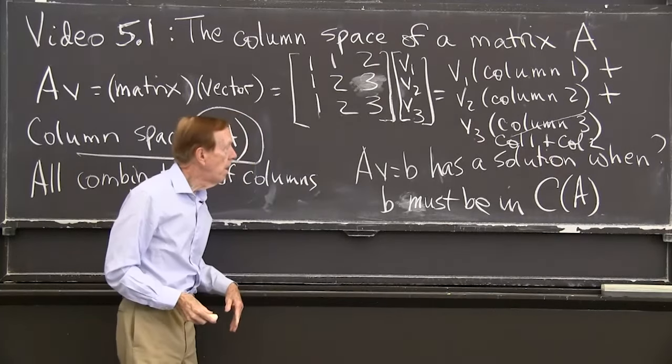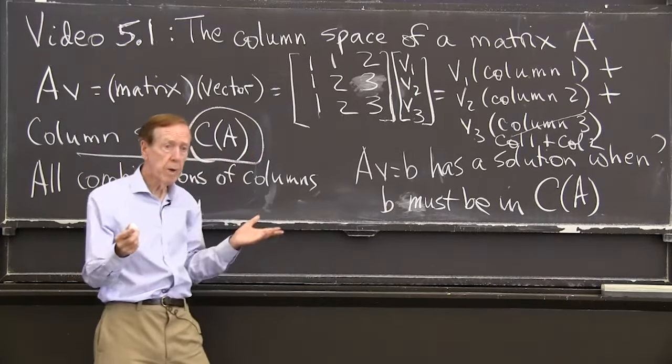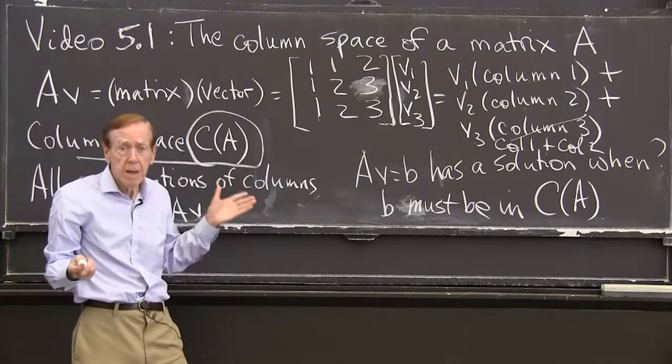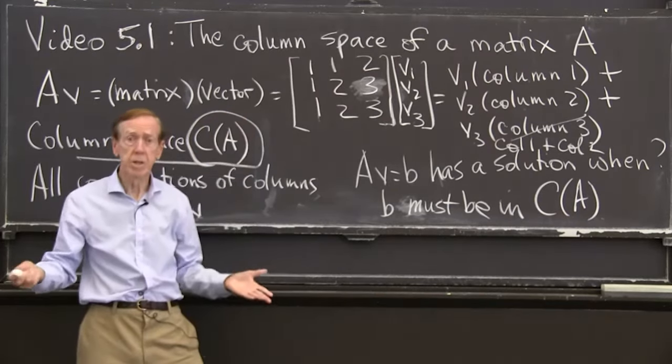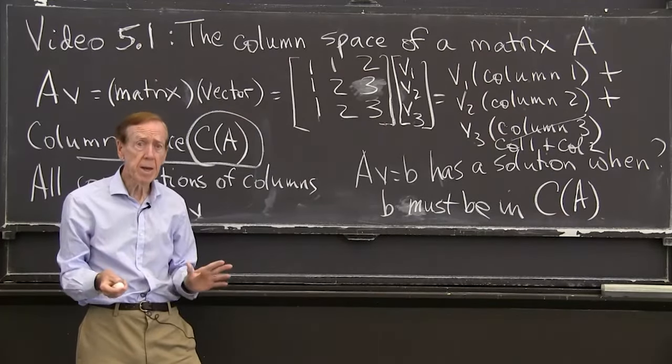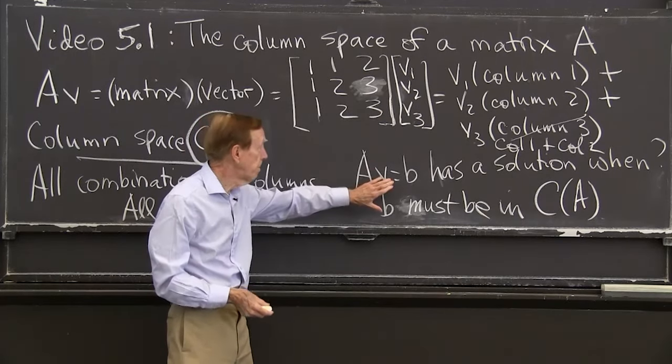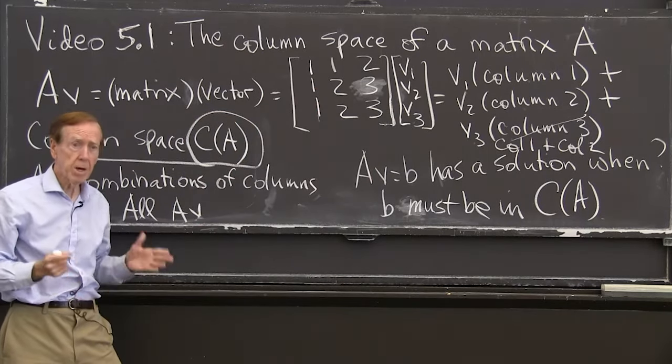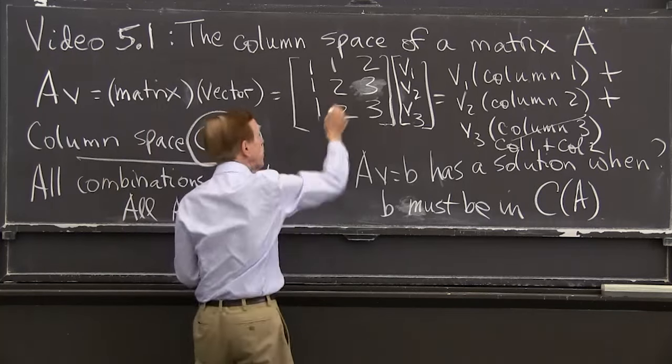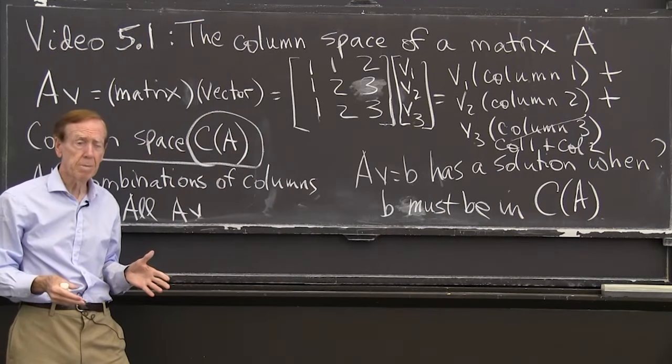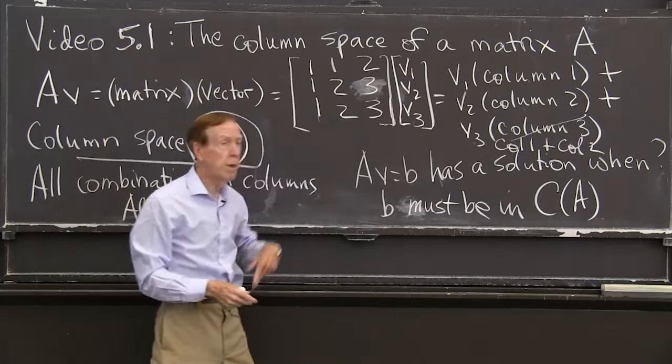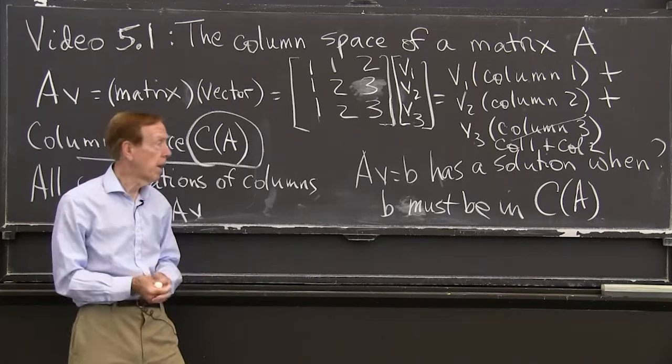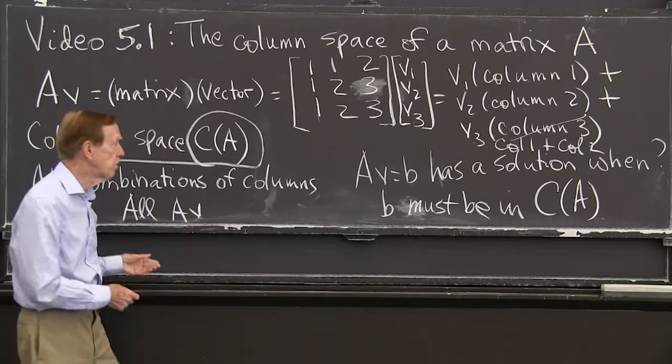For that example, only b's where we can get a solution, b's that are combinations of the first two columns. Because having the third column at our disposal gives us no help. Doesn't give us anything new. It would be solvable if b equals 1, 1, 1. That's a combination of the column. Or if b equals 1, 2, 2. That's another simple combination of the columns. Or if b equals 2, 3, 3. But I'm staying on a plane there. And most b's are off that plane.